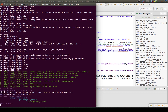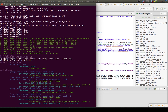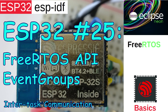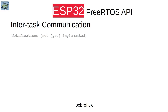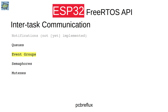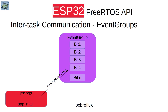Today I want to continue the series about the ESP32 and FreeRTOS, and especially the API around inter-task communication. I will continue with event groups. If you haven't seen the last video about queues, please watch that first — it's better for understanding inter-task communication, because event groups are a lightweight option when you don't need a queue and only want to synchronize some events. Let's start with an example.